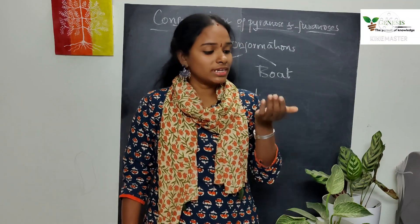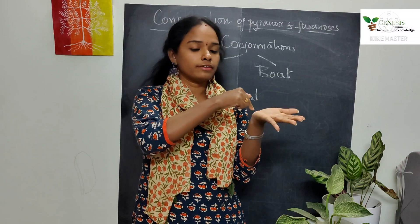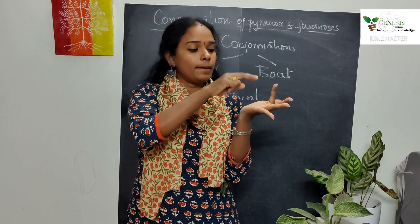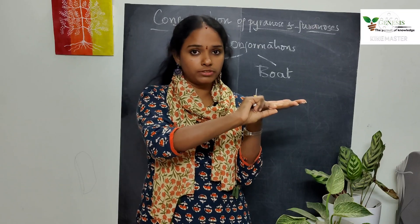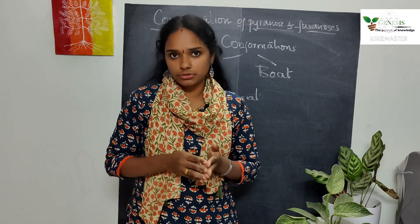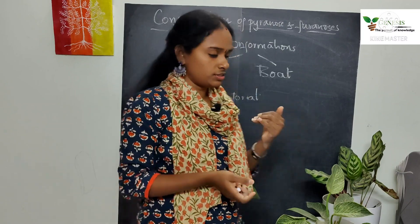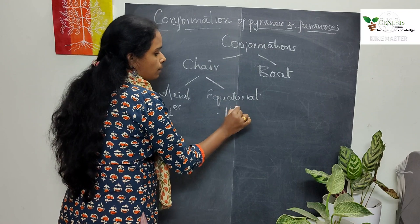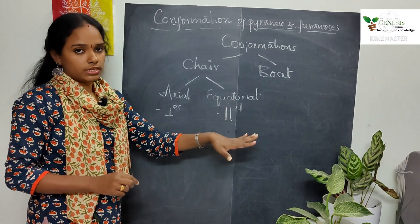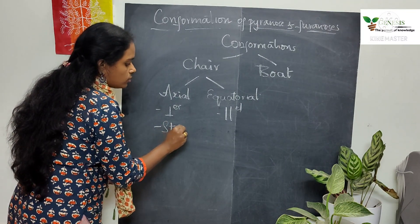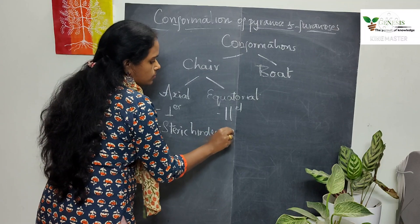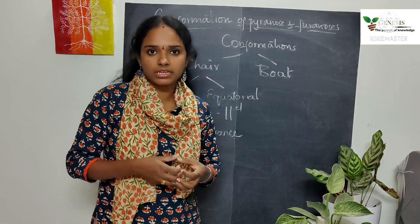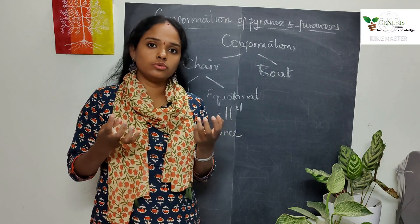So axial substituents are perpendicular to the plane of the ring, while equatorial substituents are parallel to the plane of the ring. Axial bonds cause more steric hindrance compared to equatorial bonds.